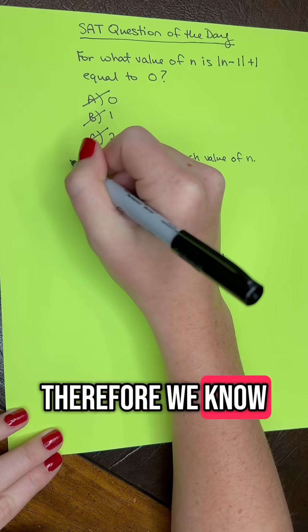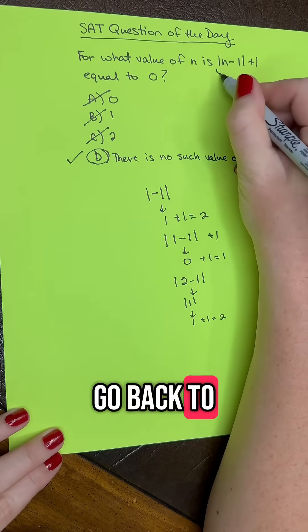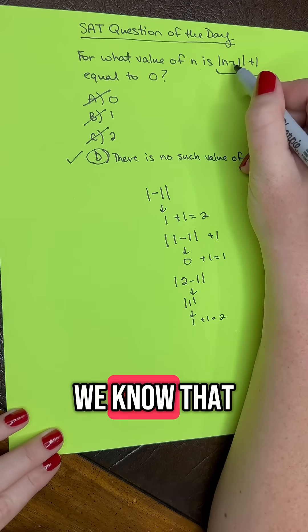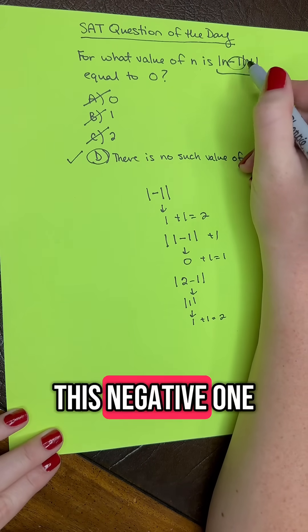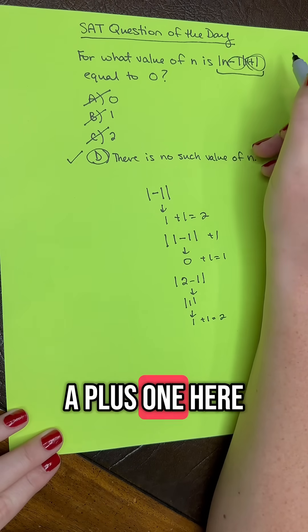Therefore we know that D is our final answer. And if we go back to the initial equation and just look at it, we know that because we have this negative 1 here, and we have a plus 1 here...